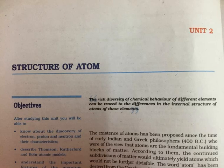If the motion of an electron is described on the basis of classical mechanics and electromagnetic theory, one may ask: why not consider electrons as stationary around the nucleus? If the electrons were stationary, electrostatic attraction between the dense nucleus and the electrons would pull the electrons toward the nucleus to form a miniature version of Thomson's model of atoms. Another serious drawback of the Rutherford model is that it says nothing about the electronic structure of atoms — that is, how the electrons are distributed around the nucleus and what are the energies of these electrons.